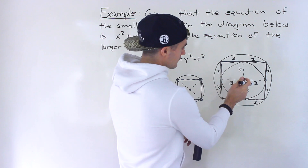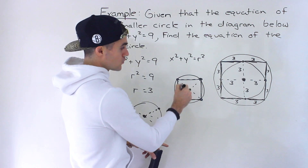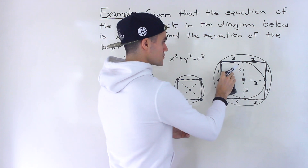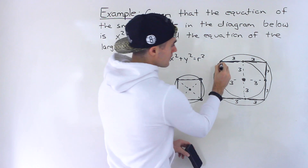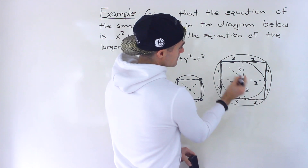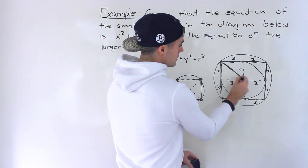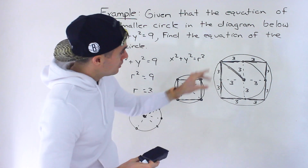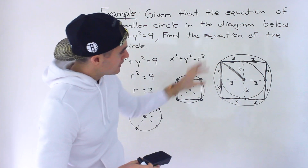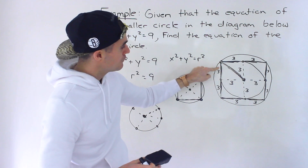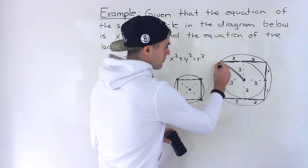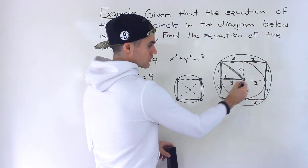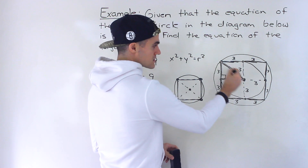Coming back to the diagram, let's work with one of these radii. If we work with this one over here, that is the radius of the larger circle — from the center to one vertex of the square. And if you look at it more closely, we can actually make that the hypotenuse of a right triangle. It's an isosceles right triangle because we have a length of 3 on one side and a length of 3 on the other.